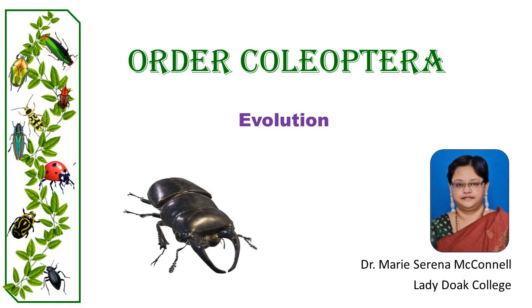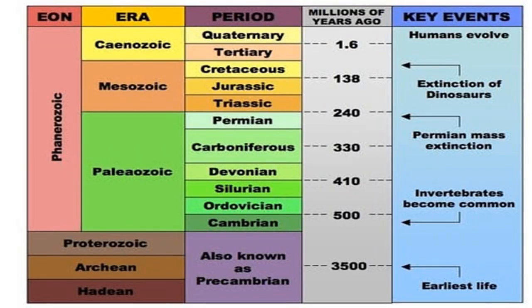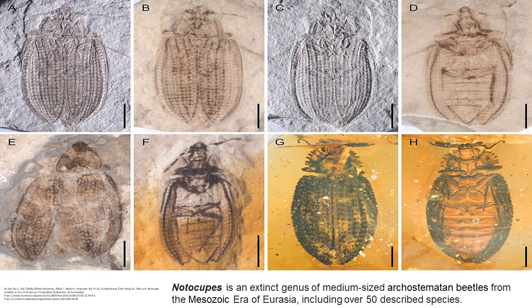Evolution of Coleopterans. As you are aware, beetles are the largest group of insects on planet Earth. The origins of beetles trace back to the earliest Permian period, around 295 million years ago, with the discovery of Coleopis fossils in Germany. These early beetles, grouped as Proto-Coleoptera, were likely xylophagous and wood-boring insects.